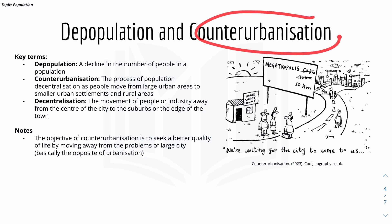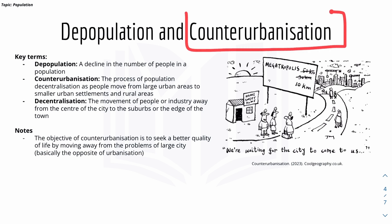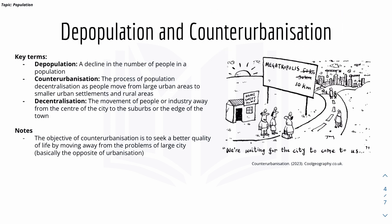The opposite of counter urbanization is urbanization, where people move from rural areas to urban areas for better job opportunities. Counter urbanization happens for reasons such as cheaper housing prices and the ability to build bigger houses. There's also decentralization, which is the movement of people or industry away from the center of a city to the suburbs or the edge of town.